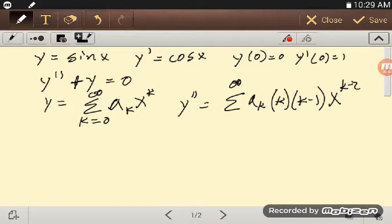So y is our power series, sum k equals 0 to infinity, a sub k, x to the k, and our y double prime is that second derivative. So now I plug everything into the differential equation. Whoops, I left off my k equals 2.